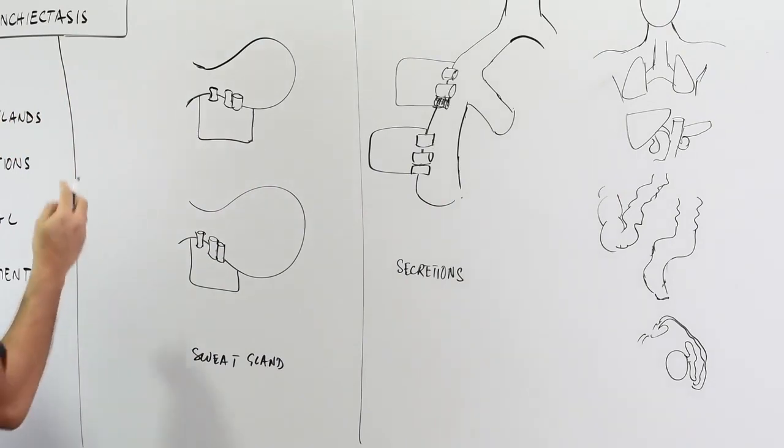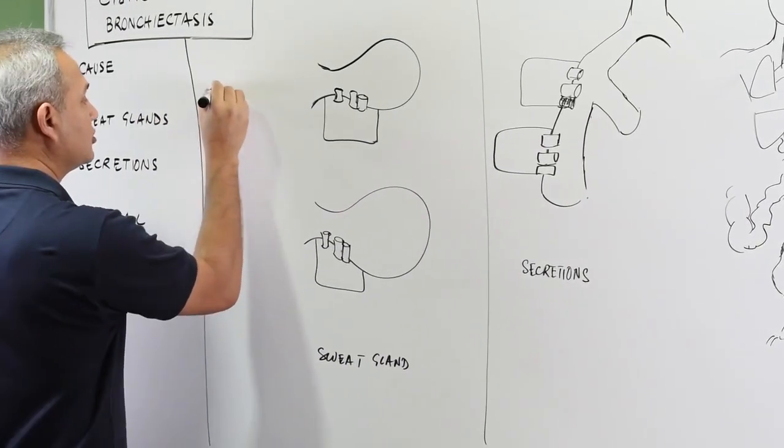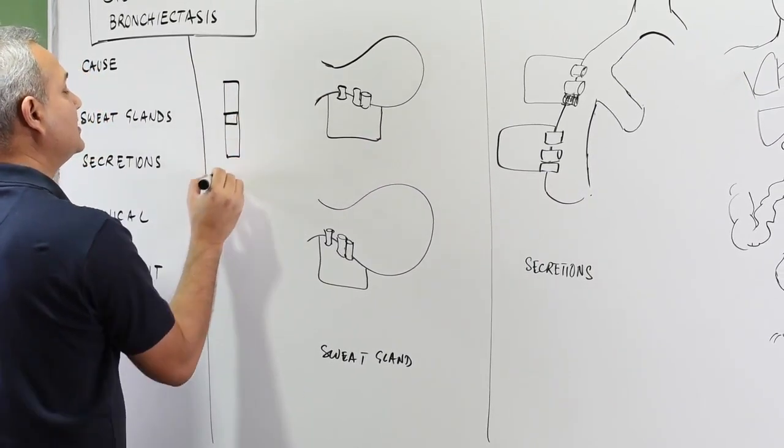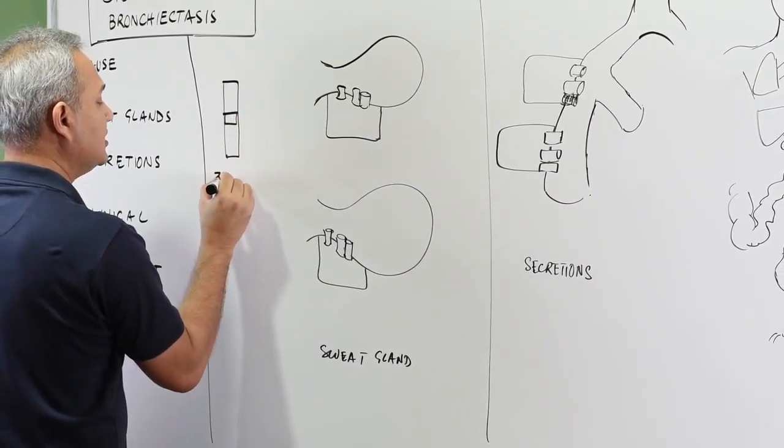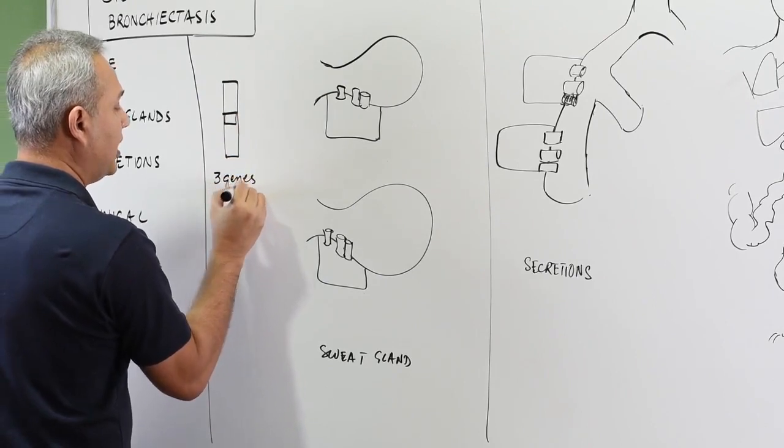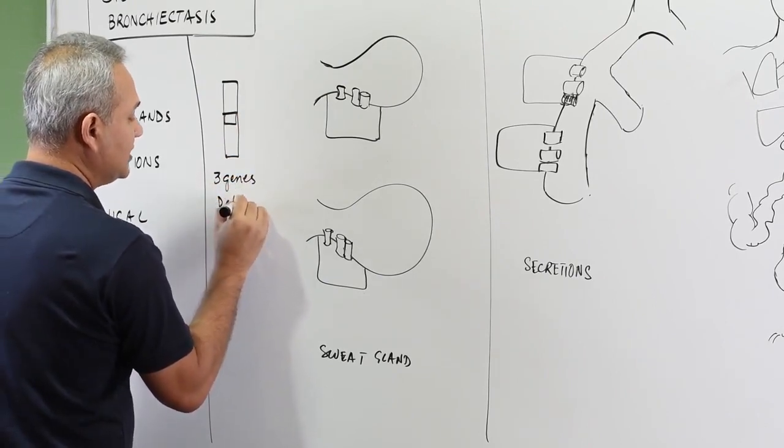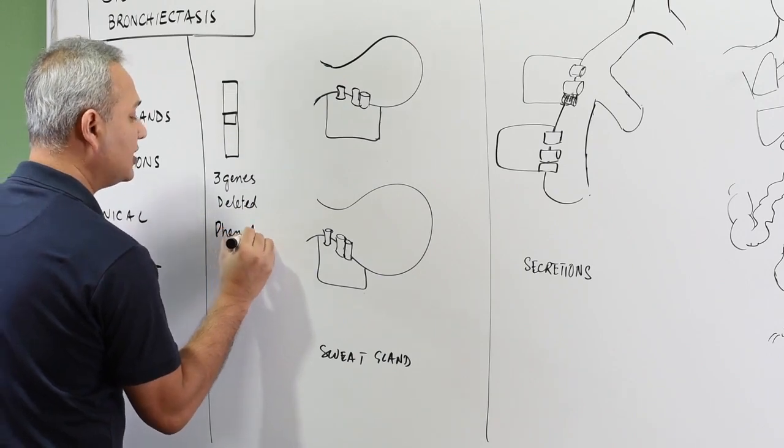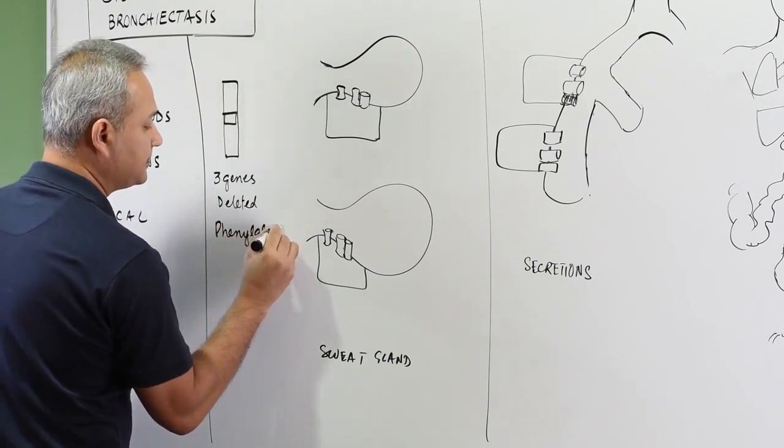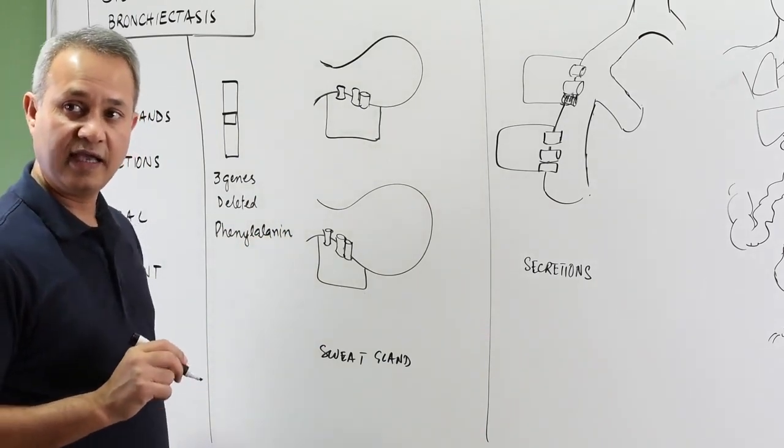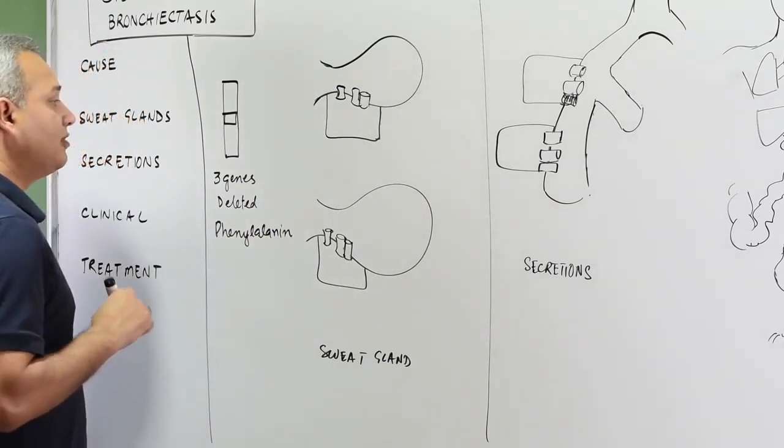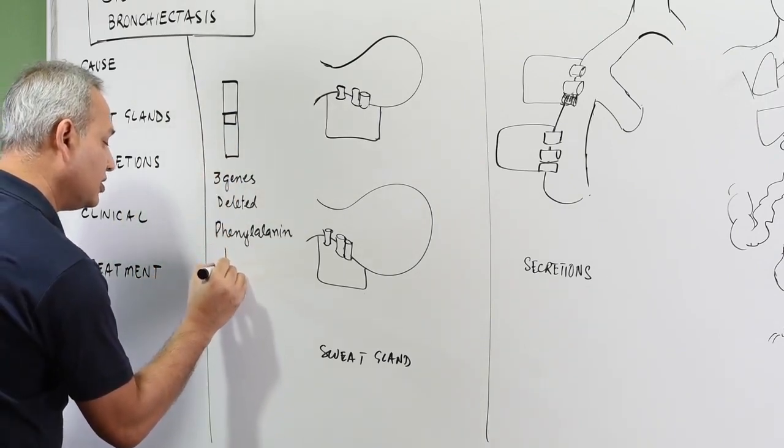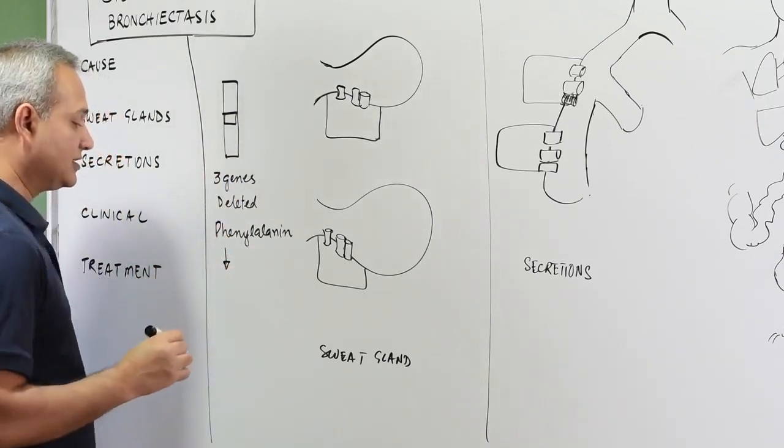Now what is this disease? What happens is that on chromosome number seven, there are three genes that get deleted. These three genes that are deleted are responsible for phenylalanine production. These genes are finally responsible to contribute proteins to CFTR.